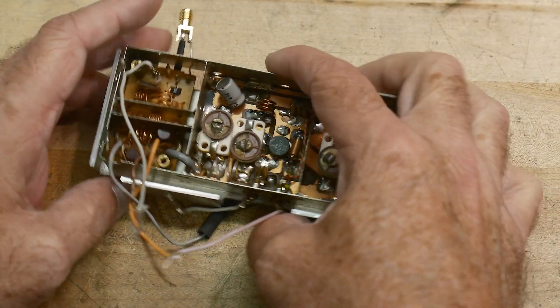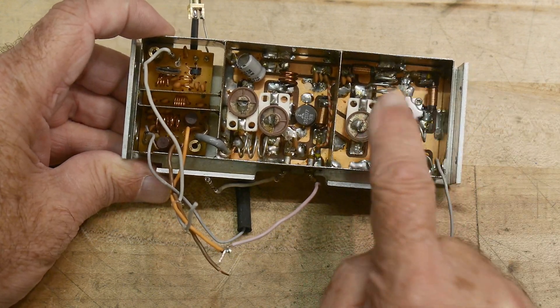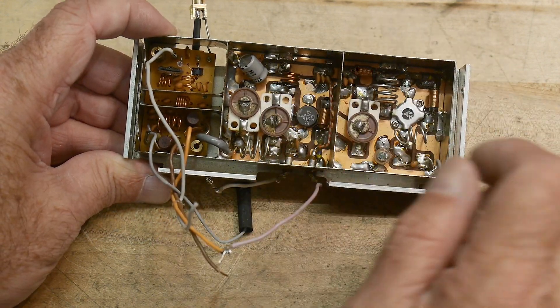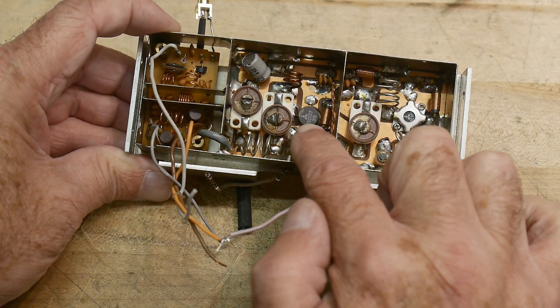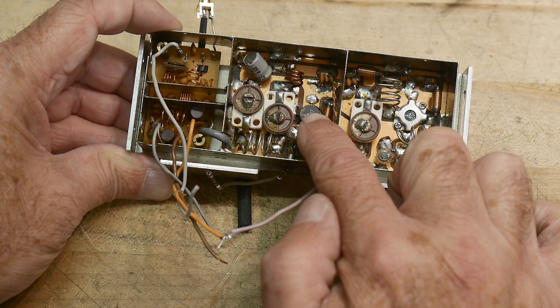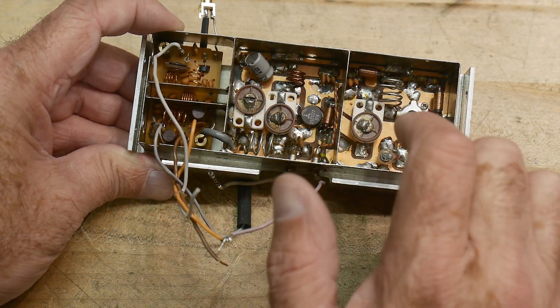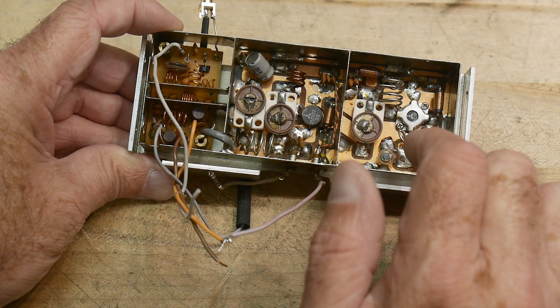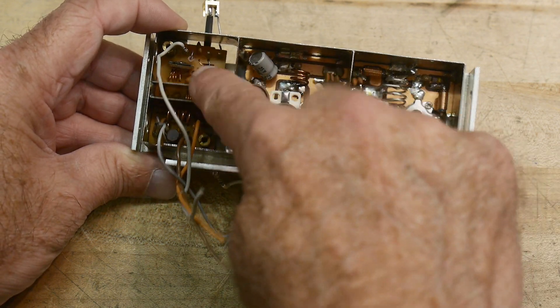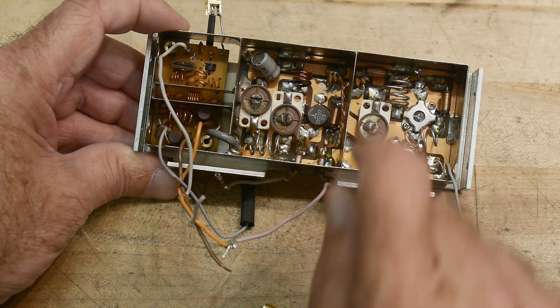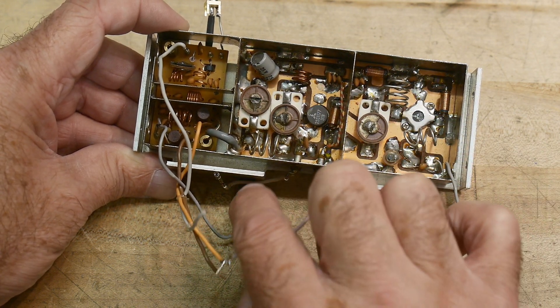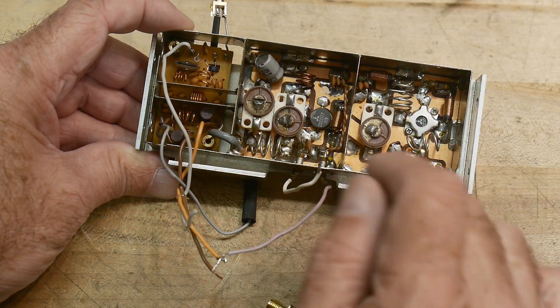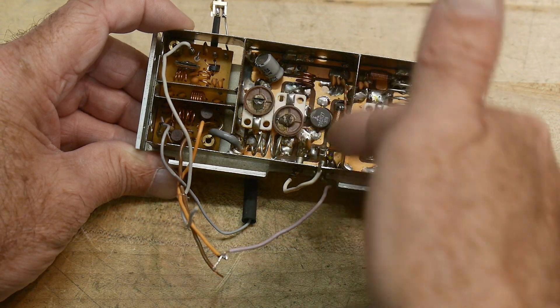And then inside the radio, this is the pre-driver, and this is the final amplifier, and it uses a 2SC1177, which I believe is a 10-watt transistor. And then it has a little SWR bridge over here, and it also has a wire coming out here for output power. It's a tap.